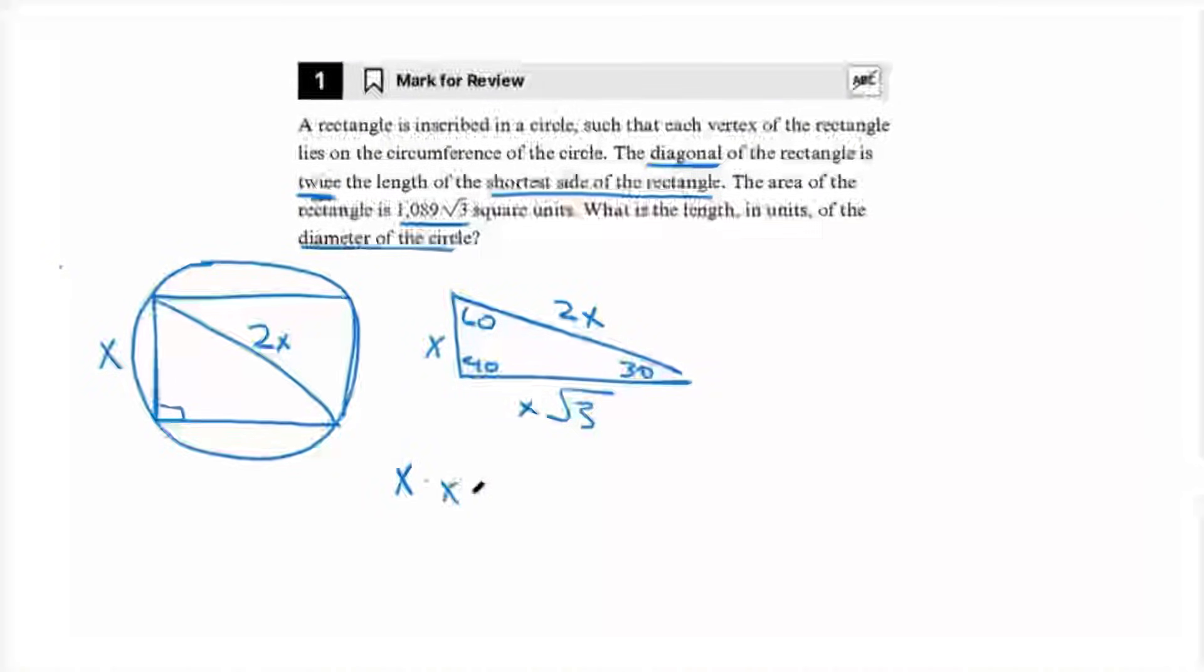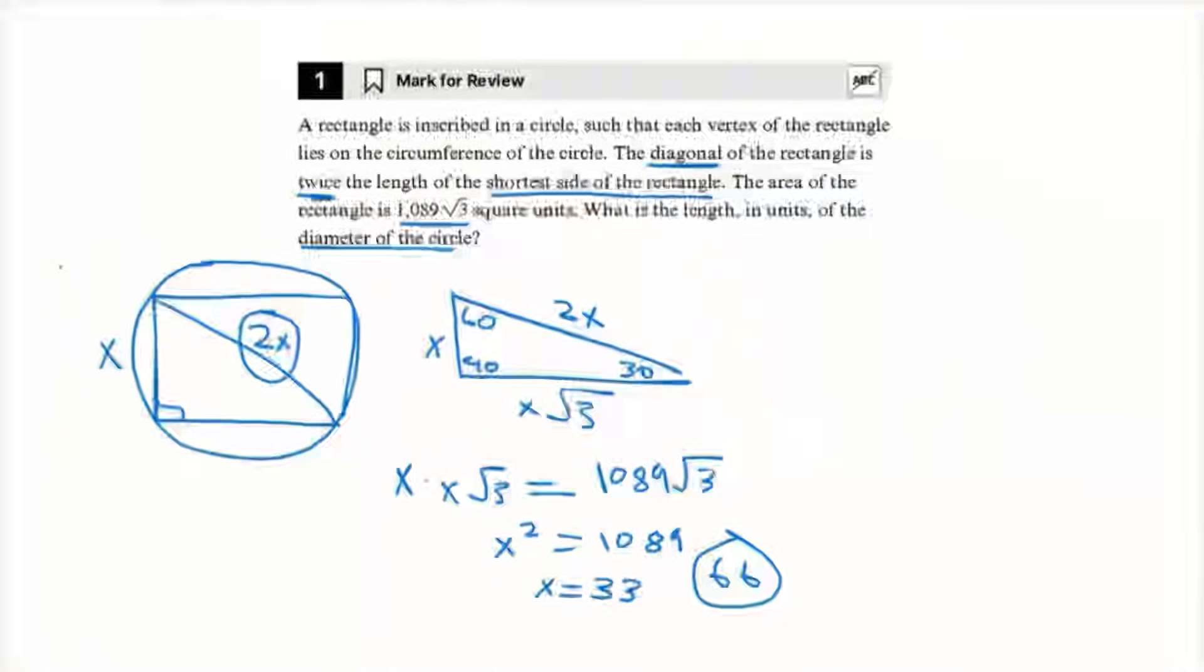So the first step is to solve for x. And we're given the area of the rectangle. So we can multiply x by x root 3, which are both sides of the rectangle, and we get the area of 1089 root 3. That simplifies into x squared is equal to 1089. So we take the square root of both sides, and we get x is equal to 33. And since we know that the diameter is just 2x, we multiply it by 2 and get 66 as our answer. Now let's move on to question number 2.